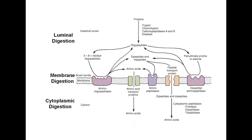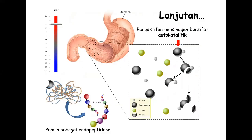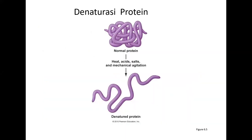Jawaban: Protein memiliki struktur primer, sekunder, tersier, dan kuartener. Dalam proses ekspresi genetik, ribosom merangkaikan asam amino menjadi polipeptida panjang (bentuk primer). Dalam kondisi sesuai, asam amino-asam amino berinteraksi membentuk struktur sekunder yaitu lipatan (beta-sheet) dan putiran (alfa-heliks). Kemudian terbentuk struktur tersier—globular seperti enzim dan reseptor, atau fibrililer.